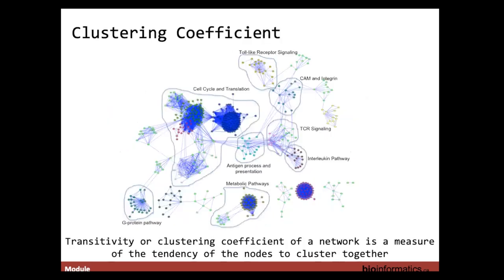The clustering coefficient, or transitivity, describes the modular connections within networks. High transitivity means the network contains communities of densely internally connected nodes. Looking at these communities is a useful strategy for reducing network complexity and extracting functional modules — for example, protein complexes — that reflect the biology of the network. There are several clustering analysis approaches to discuss.